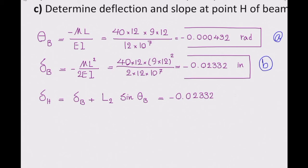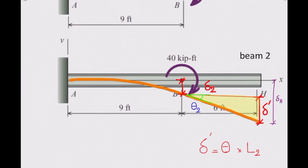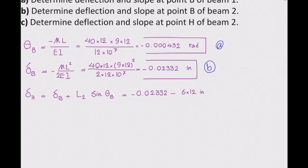Let's plug the values. Negative 0.02332 is the value of deflection at B. Length of the beam from B to H is 6 feet, which is equal to 72 inches. I'm talking about this distance. From B to H is 6 feet. And the theta is 0.000432 radian. I will get this number: 0.0544 inch. That is the downward deflection of beam at that point.